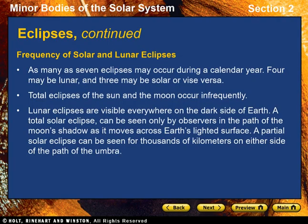Frequency of Solar and Lunar Eclipses. As many as seven eclipses may occur during a calendar year — four may be lunar and three may be solar, or vice versa. However, total eclipses of the sun and moon occur infrequently. Solar and lunar eclipses do not occur every lunar orbit because the orbit of the moon is not in the same plane as the orbit of Earth around the sun. The moon crosses the plane of Earth's orbit only twice in each revolution around Earth. A solar eclipse will occur only if this crossing occurs when the moon is between Earth and the sun. If this crossing occurs when Earth is between the moon and the sun, a lunar eclipse will occur. Lunar eclipses are visible everywhere on the dark side of Earth. A total solar eclipse, however, can be seen only by observers in a small path of the moon's shadow as it moves across Earth's lighted surface. A partial solar eclipse can be seen for thousands of kilometers on either side of the path of the umbra.